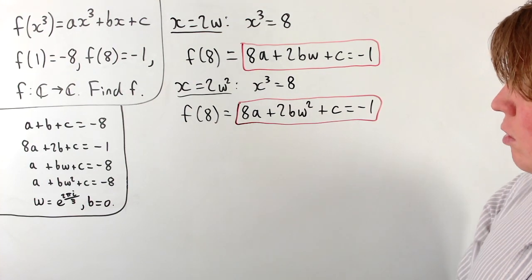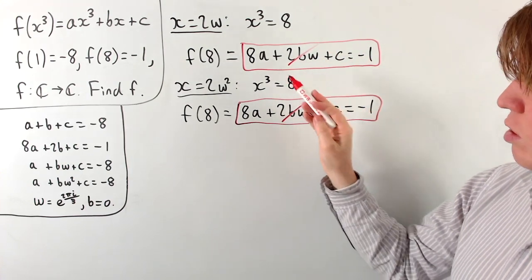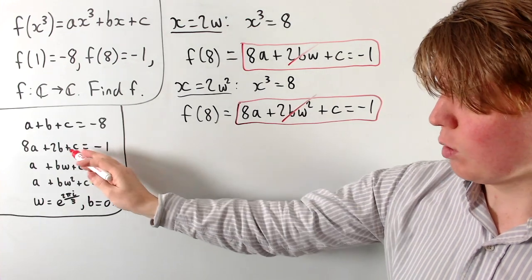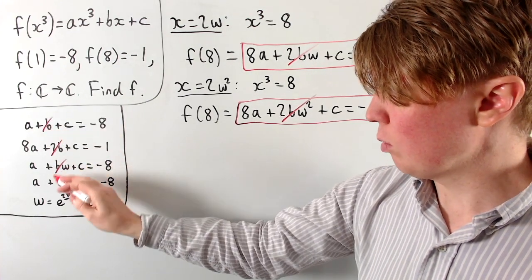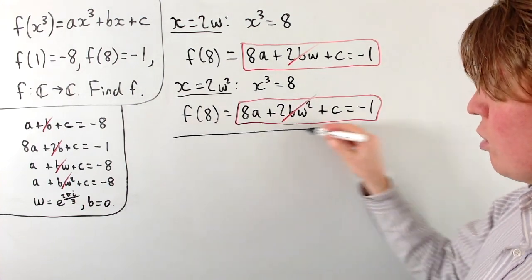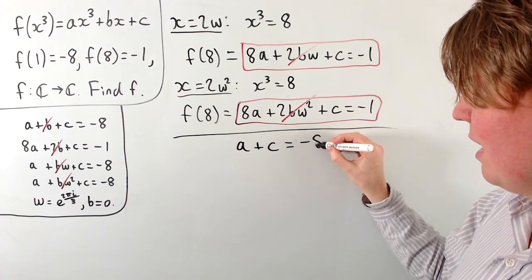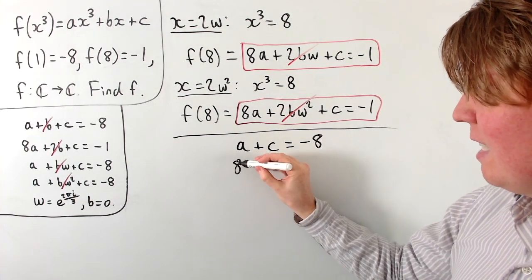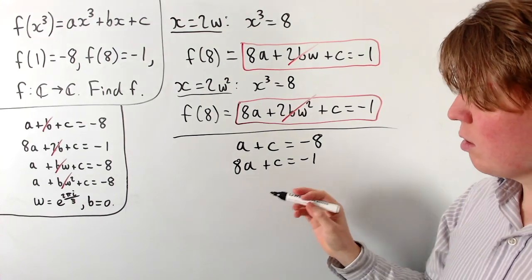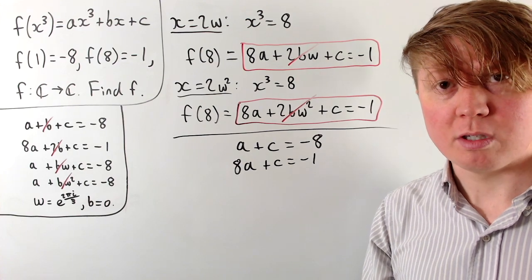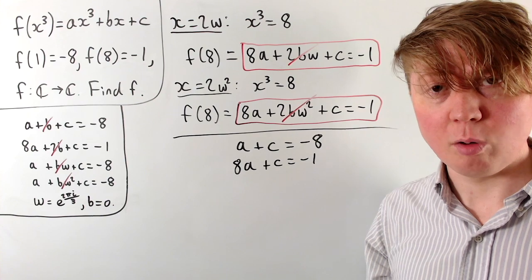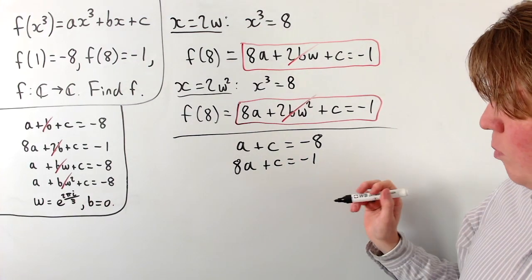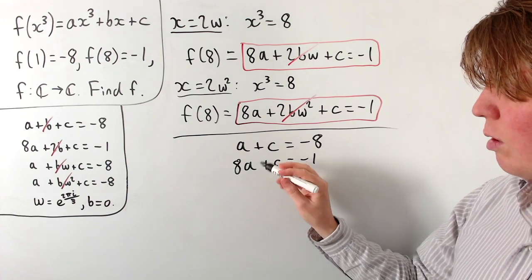With b = 0, the 2bω and 2bω² terms disappear, and all three f(8) equations reduce to 8a + c = -1. Similarly, all three f(1) equations reduce to a + c = -8. So the problem is well-posed — even with six equations and three unknowns, everything is consistent as long as b = 0. We just need to solve these two reduced equations.